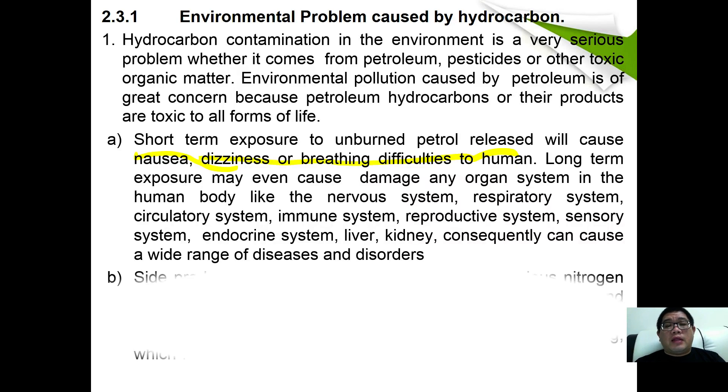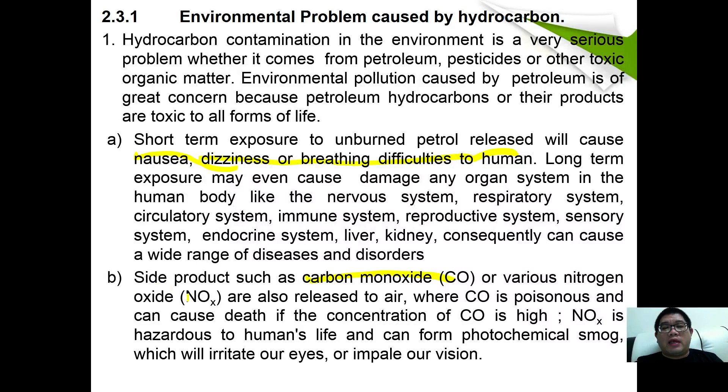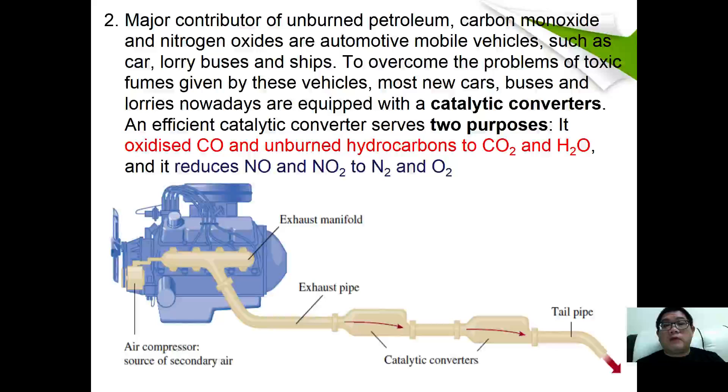Side products such as carbon monoxide and nitrogen oxides (NOx) are also released to air. Carbon monoxide is a poisonous gas to humans and can cause death if the concentration of CO is very high. NOx is also hazardous to humans and can form photochemical smog which irritates our eyes or impairs our vision. Most major contributors—unburnt petroleum, carbon monoxide, and nitrogen monoxide—come from automobile vehicles such as cars, lorries, buses, and ships. To overcome this problem, they are equipped with catalytic converters.